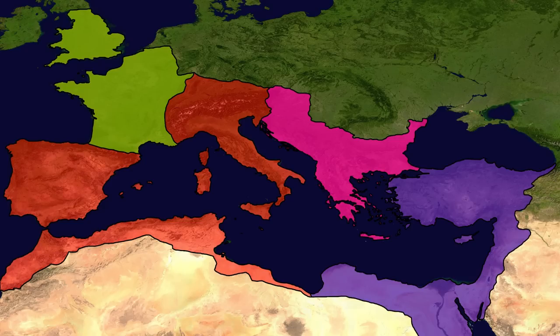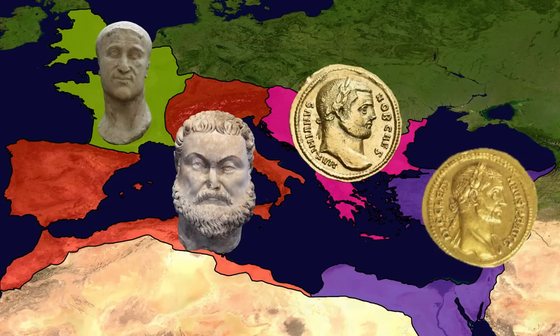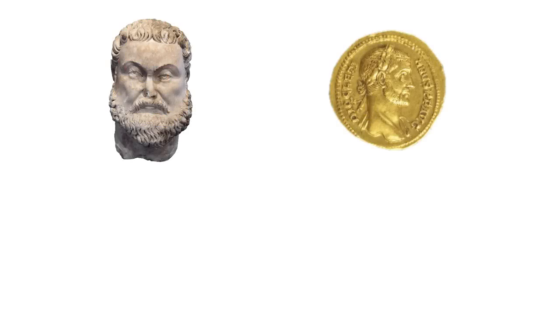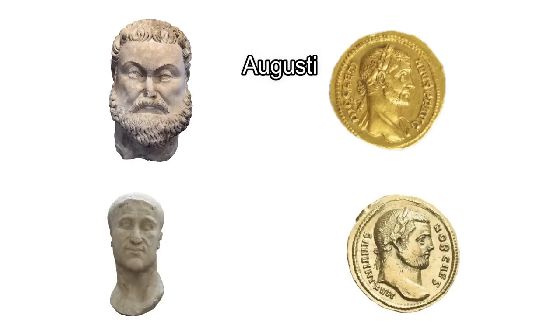A few years later, Diocletian decided to further subdivide the empire by promoting another two men, Galerius and Constantius Chlorus, to the purple. According to Diocletian's system, he and Maximian were the two senior emperors, titled Augustus, while Galerius and Constantius were the junior emperors, titled Caesars. Galerius and Constantius were to succeed the senior emperors when the time came, and their place was to be taken by another two junior emperors. It was a clever system.